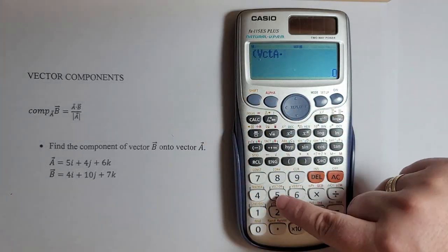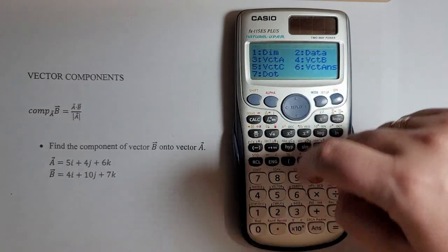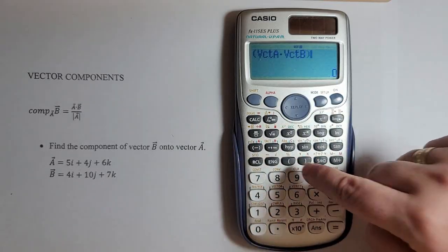Shift again, 5, 4 for vector B. Close the parentheses.